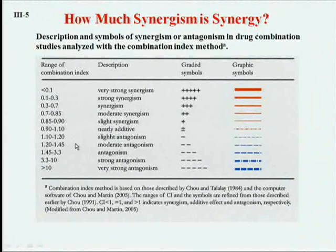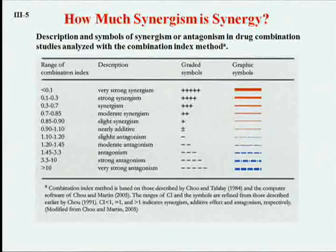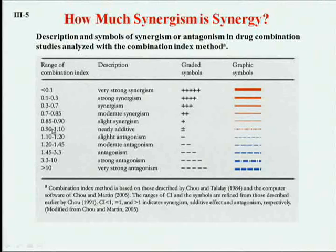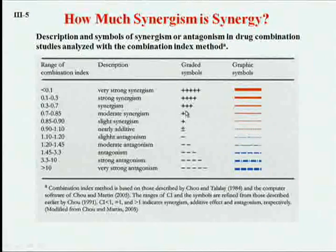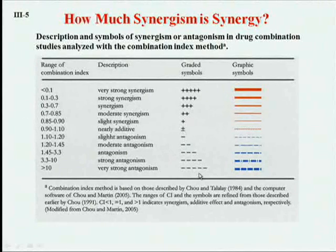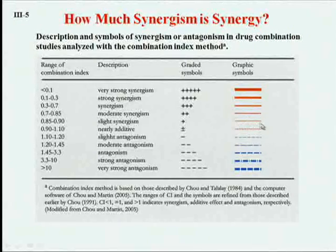How much is synergy? People say synergy, but it can be tiny synergy or very strong synergy. So this is my recommendation: the dose range of combination index from 0.9 to 1.1 is nearly additive, then slight synergism, moderate synergism, synergism, strong synergism, very strong synergism — and the same categories for antagonism. This is shown with color and graphic lines on the plot. Everything is quantitative.